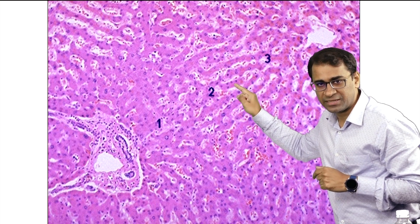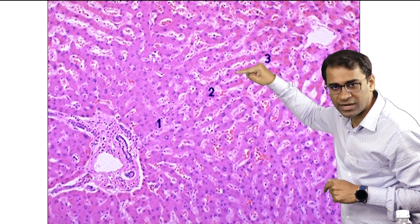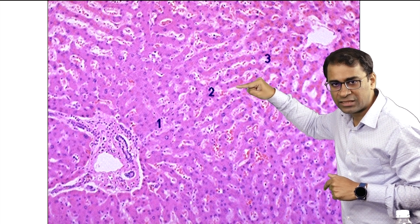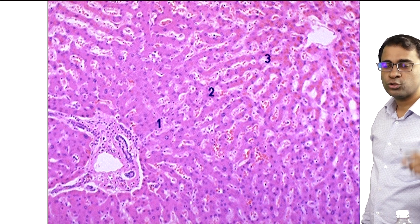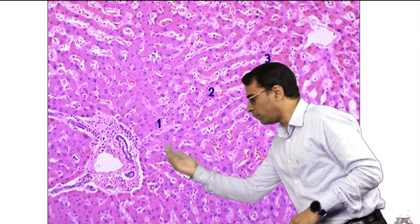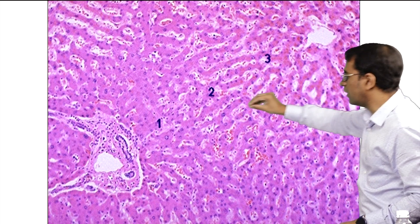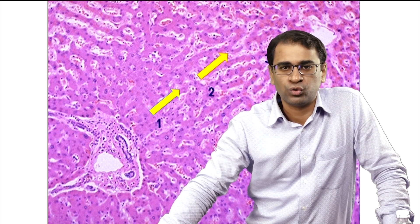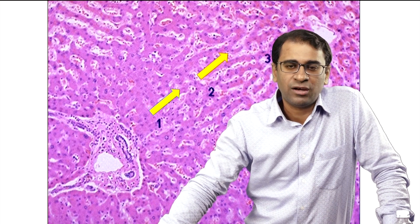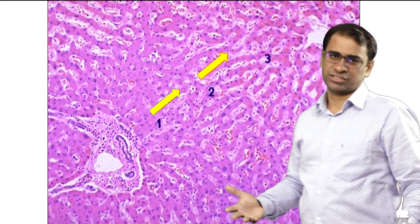Look at these pink cells — these are all hepatocytes. The wide area between them is called sinusoids. What happens when blood is flowing from the artery to the veins? The blood also diffuses out. So blood flow is first around zone 1, then goes to zone 2, and then goes to zone 3. Sometimes there can be congestion, meaning the outflow of this area is completely blocked.